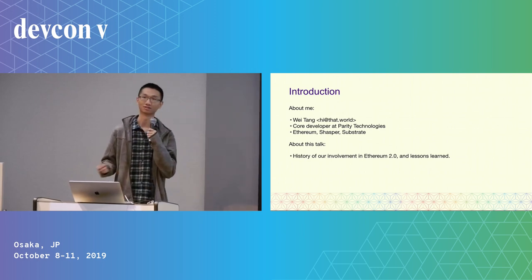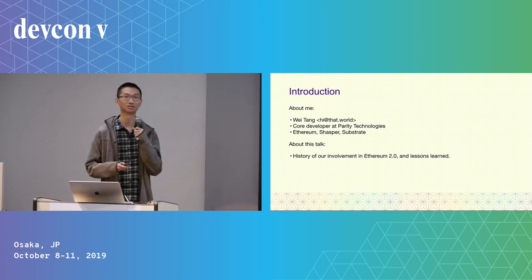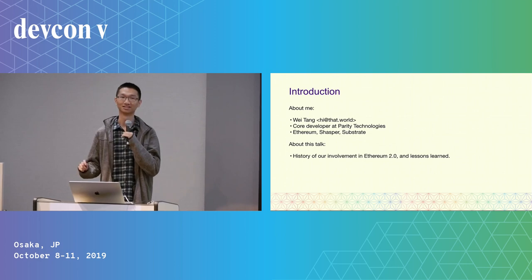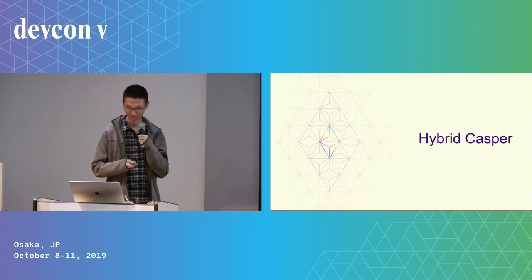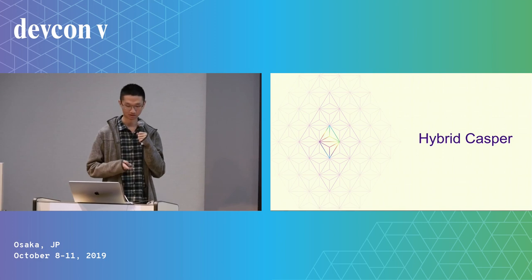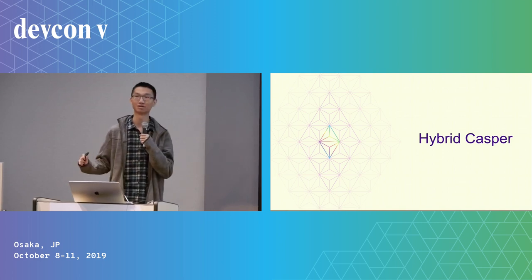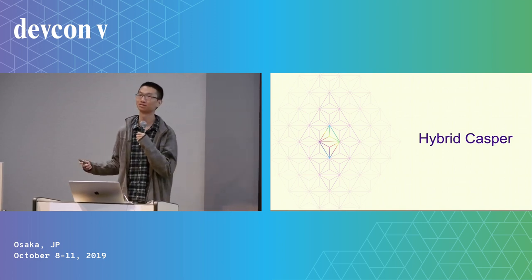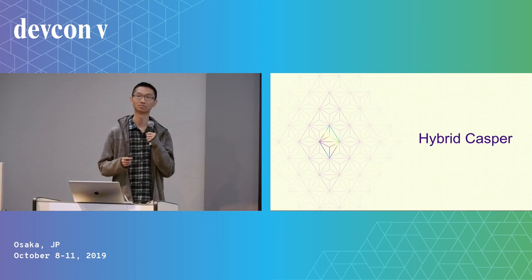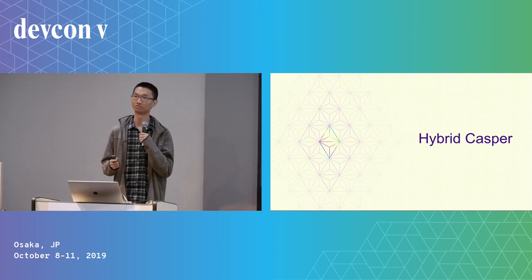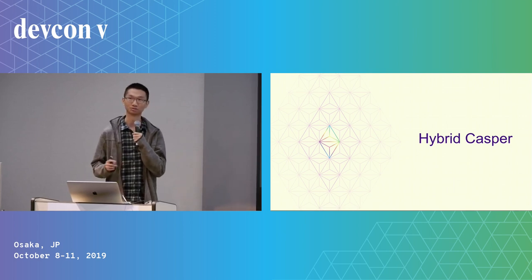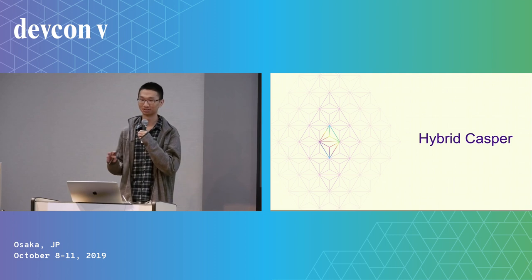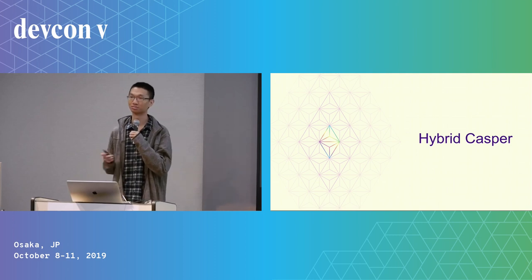In this talk, I want to talk about how we got involved in Ethereum 2.0 and some hard lessons we learned in the process. Our journey for Ethereum 2.0 is really about building a generic blockchain framework, because at Parity we build a lot of blockchains and we really want to make sure we don't write too much duplicate code.